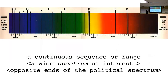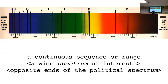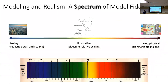Another metaphor I'll be using throughout the semester is the spectrum. A spectrum is a continuous sequence or range — it doesn't have discrete stops. It has two ends, or at least two special defining points, with everything in between represented. I bring this up because it's a powerful metaphor that can also be applied to modeling. We can think about the spectrum of model fidelity, with metaphorical models like Monopoly on one end and analog models like New York on the other.